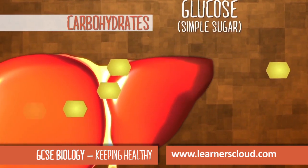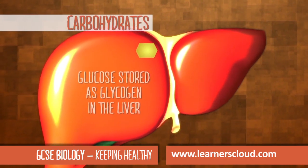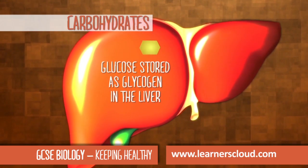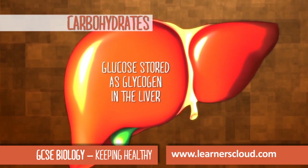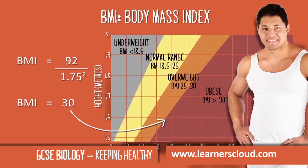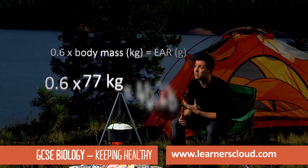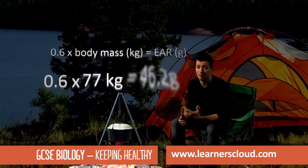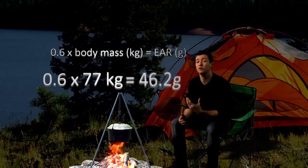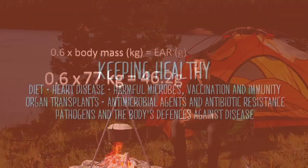If glucose isn't used in respiration, it can be stored in the liver as glycogen. He doesn't look obese — this is because muscle has a higher mass than fat. That means 0.6 times 77, which equals 46.2 grams per day.